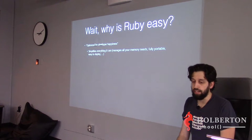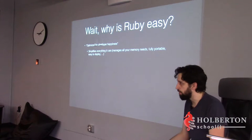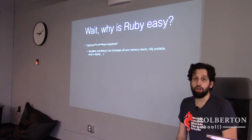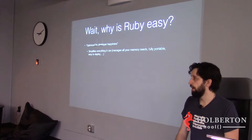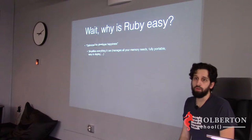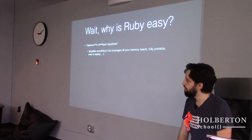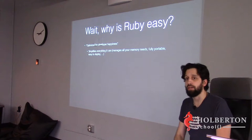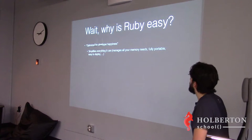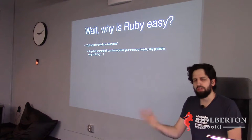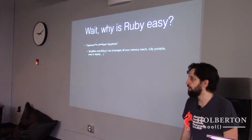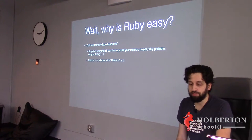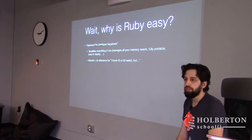What does 'optimized for developer happiness' mean? It means Ruby tries to simplify everything it can — it manages all your memory needs, it is fully portable, which means if you have a codebase running on one machine and you send it to a friend on a totally different machine, it's going to work the same. You have that guarantee. It is also easy to deploy.